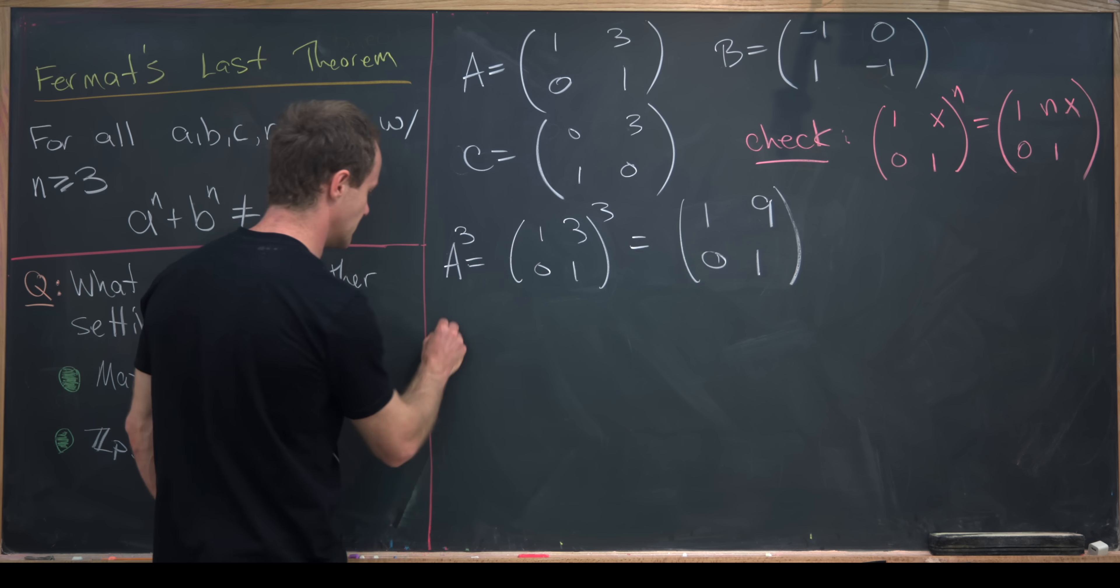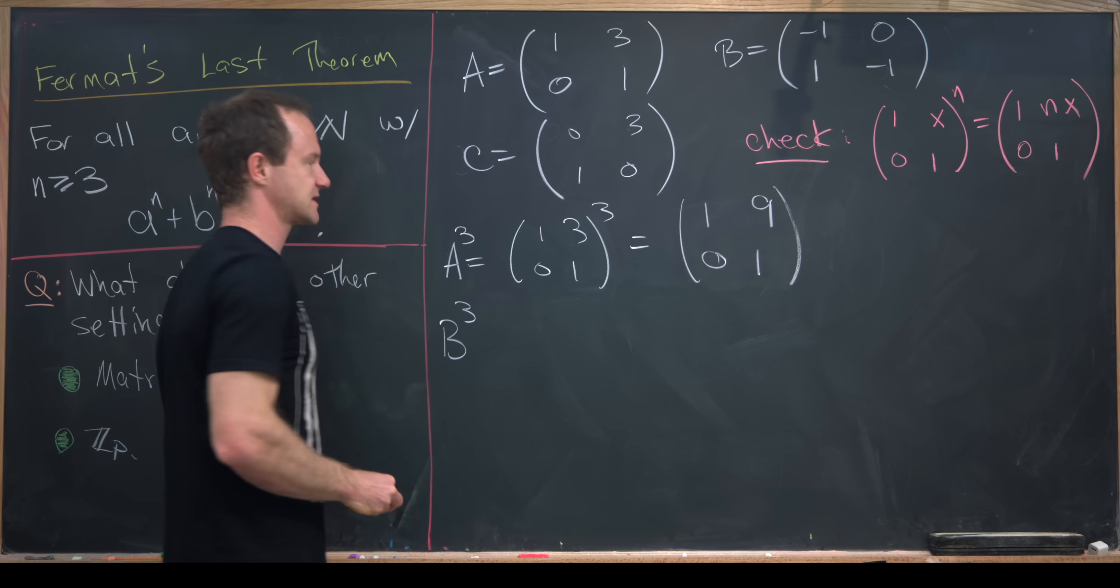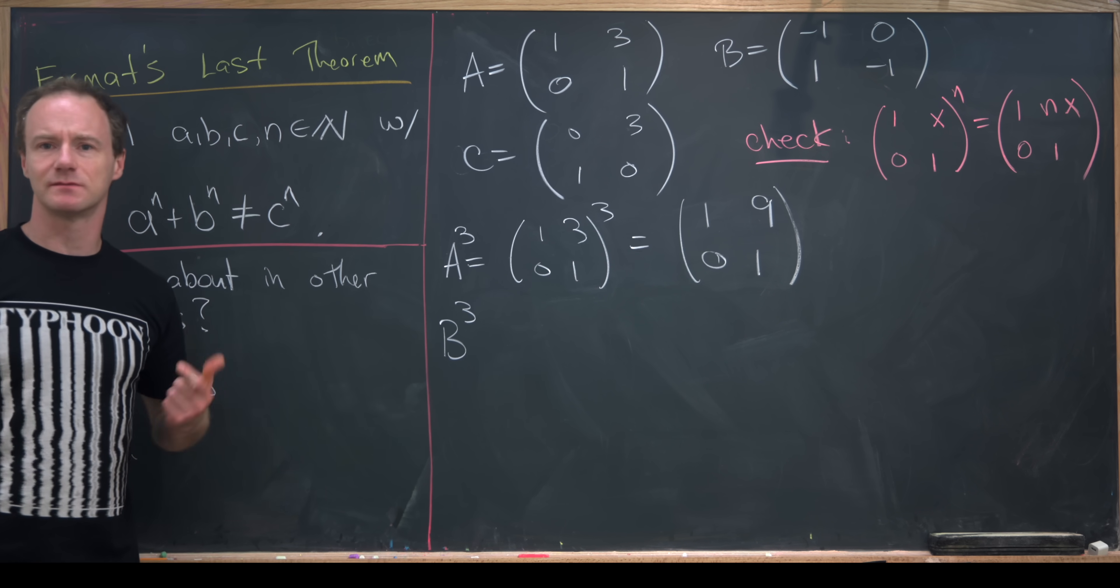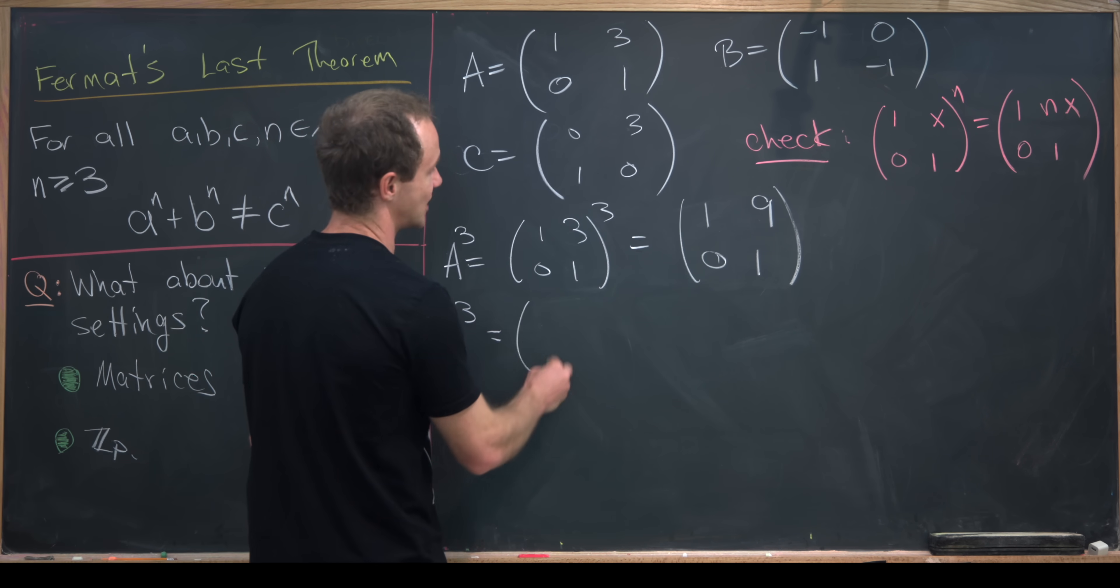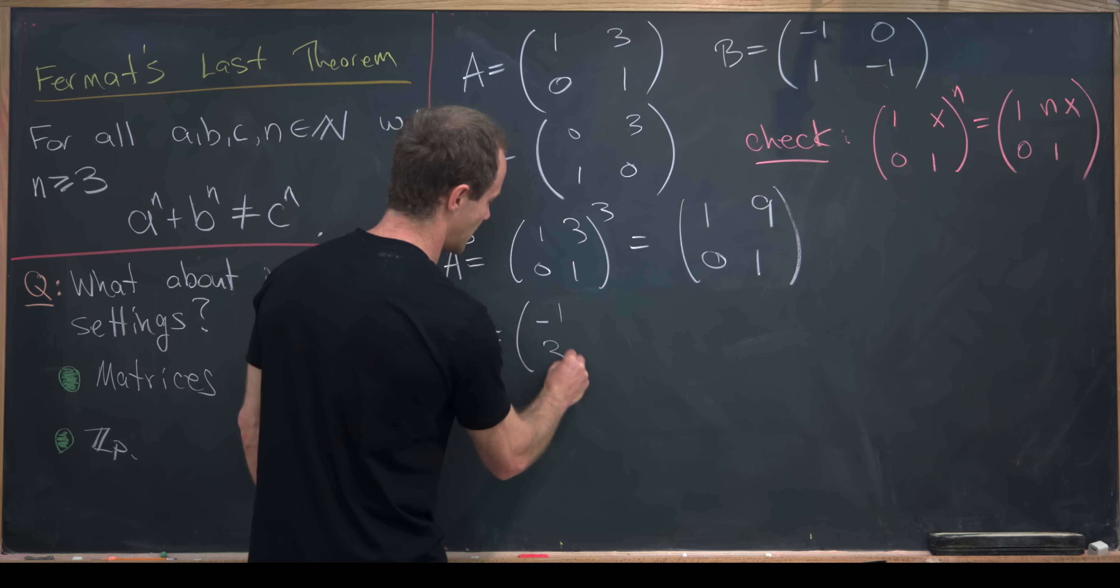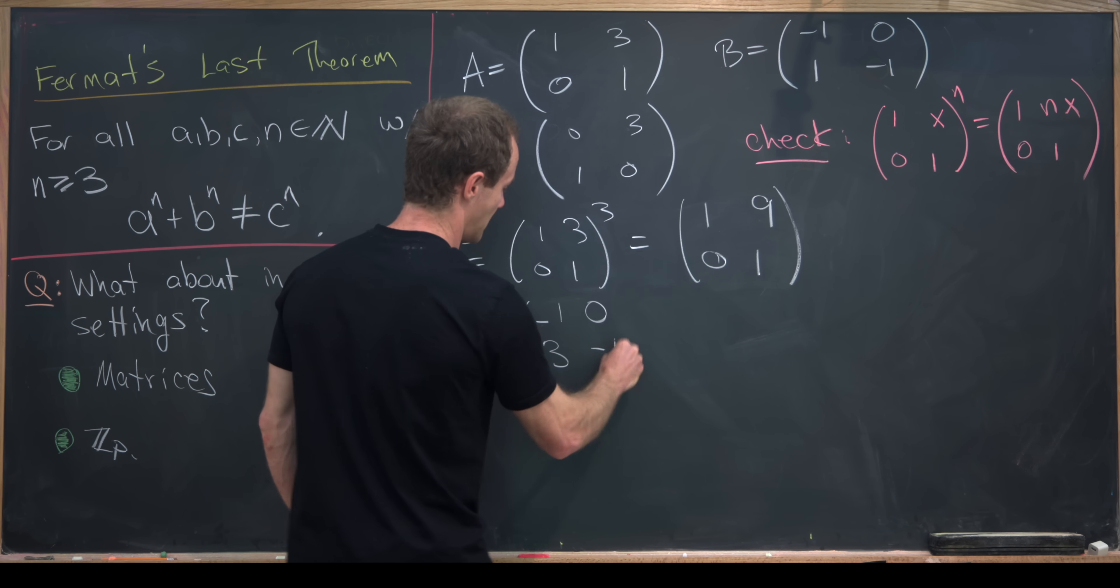Now we're ready to calculate B cubed. And in fact, B cubed has a similar trick to it. It's just there are some sign changes. So I'll let you guys check that in this case, we get minus 1, 3, 0, minus 1.